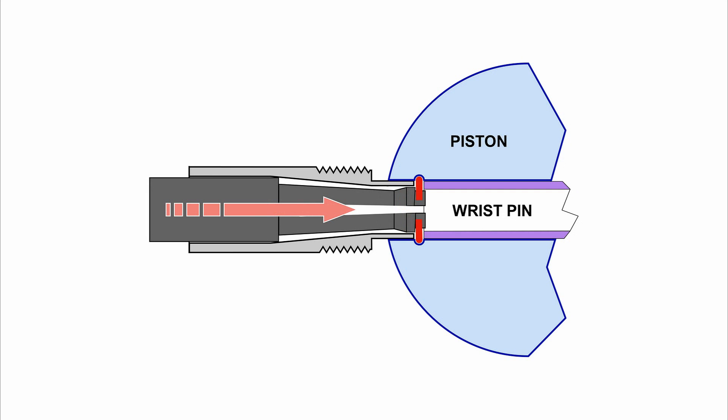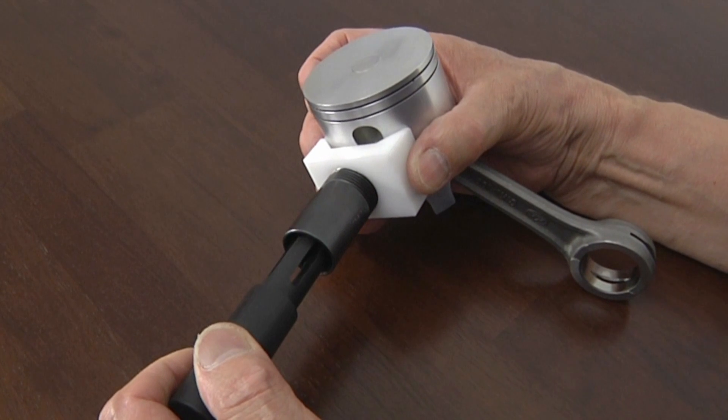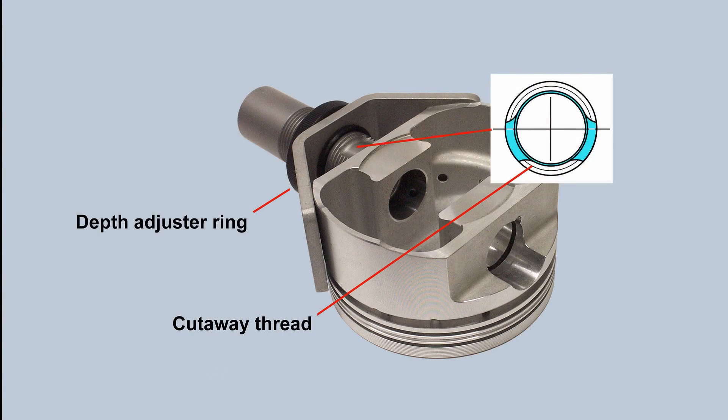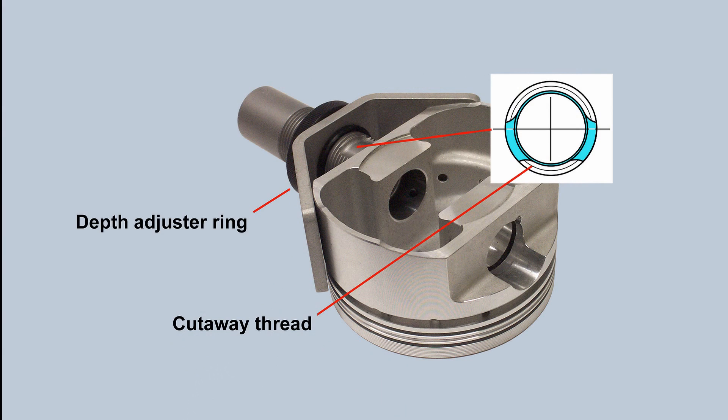Just repeat the same procedure for the second clip, once the con rod and wrist pin are in place. Now let's look at the undercut type of piston. The undercut is so close to the wrist pin bore, you can't use a fully threaded sleeve. Instead, we cut away the thread to clear the shoulder.